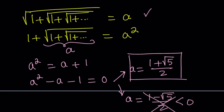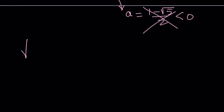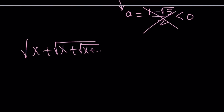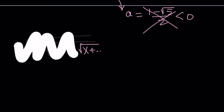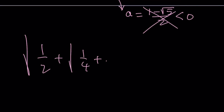Let's go ahead and see how we can use this. Our expression is a little different because the terms are different. Whenever you have a term x — the square root of x plus the square root of x, so on and so forth — you can solve this by setting it equal to something as long as it converges. But in our case, we have the square root of 1/2 plus the square root of 1/4 plus the square root of 1/16, so on and so forth.